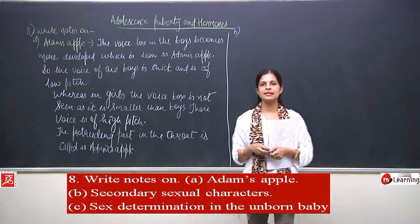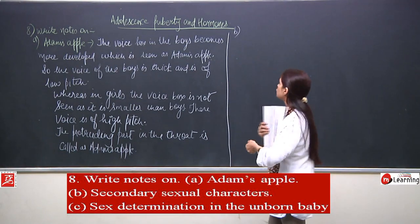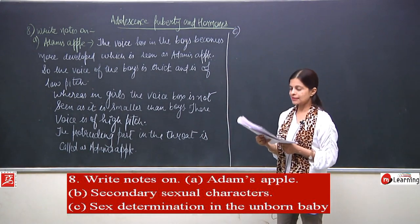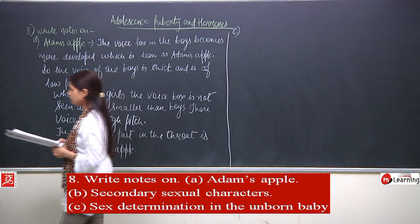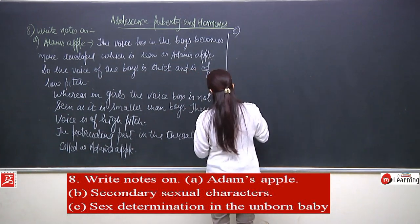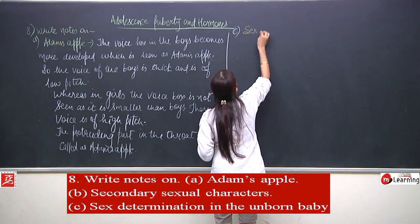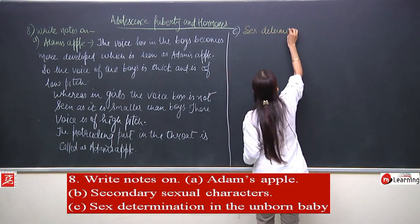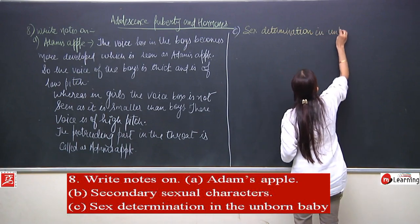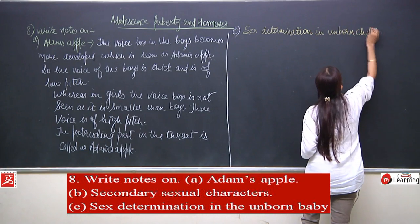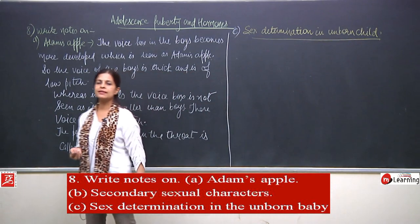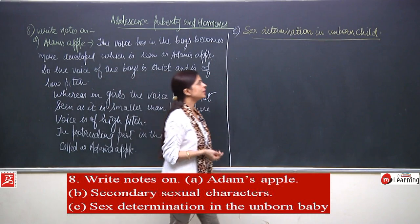Since we have already discussed secondary sexual characters, I will move to part C. Part C is about sex determination in the unborn child. Now we will discuss sex determination in an unborn child.